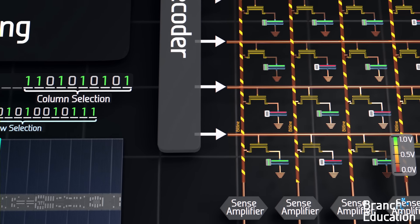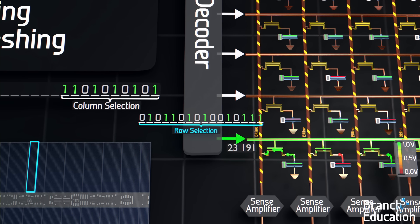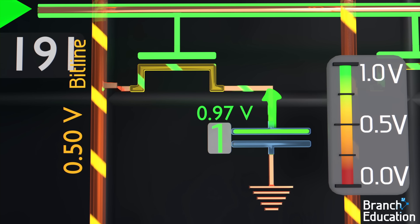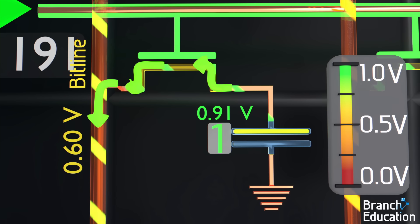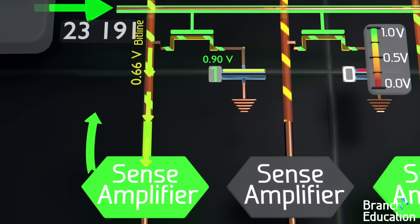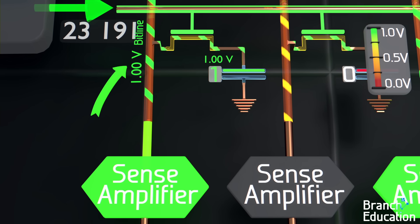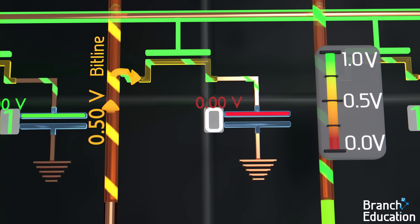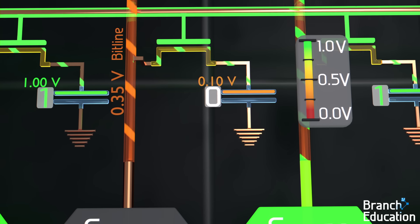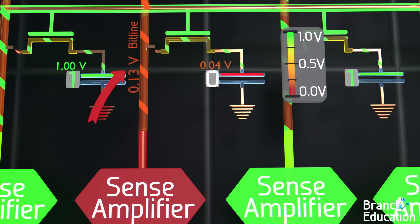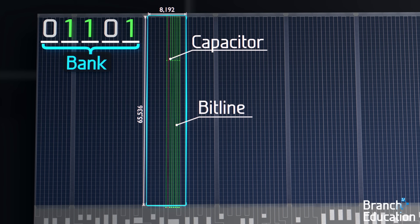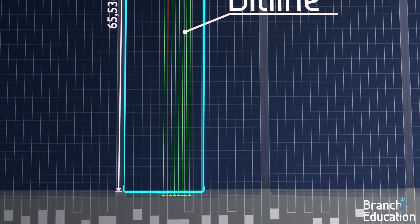Next, the 16-bit row address turns on a row, and all the capacitors in that row are connected to their bitlines. If an individual capacitor holds a 1 and is charged to 1 volt, then some charge flows from the capacitor onto the 0.5 volt bitline, and the voltage on the bitline increases. The sense amplifier then detects the slight change or perturbation of voltage on the bitline, amplifies the change, and pushes the voltage on the bitline all the way up to 1 volt. However, if a zero is stored in the capacitor, charge flows from the bitline into the capacitor and the 0.5 volt bitline decreases in voltage. The sense amplifier then sees this change, amplifies it, and drives the bitline voltage down to 0 volts. The sense amplifier is necessary because the capacitor is so small and the bitline is rather long.